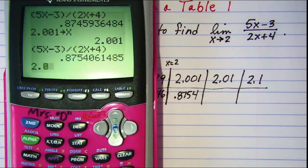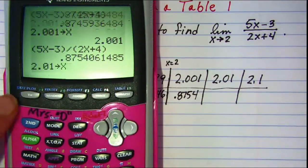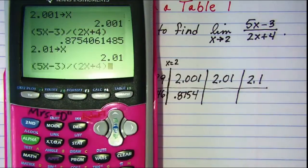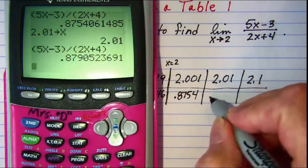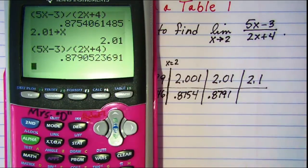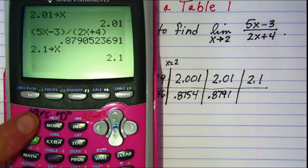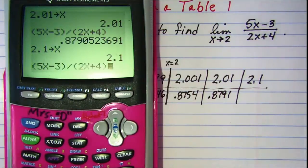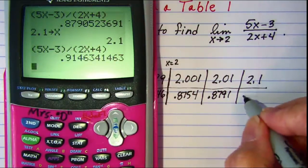So 2.01 store x, 2nd enter, 2nd enter, 0.8791 and then 2.1 store x, 0.8796.